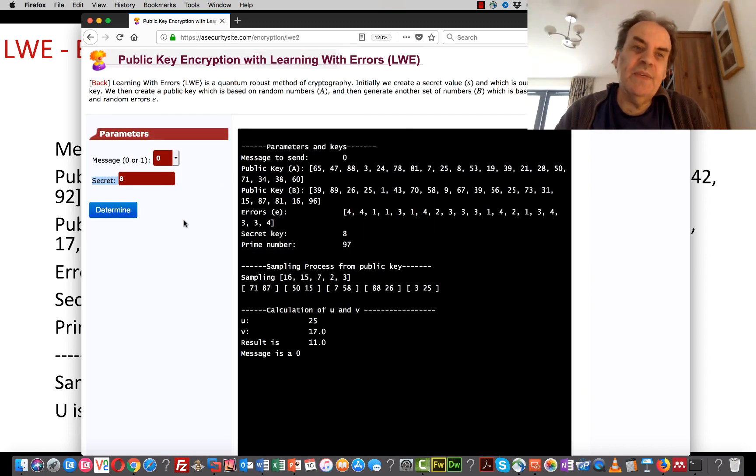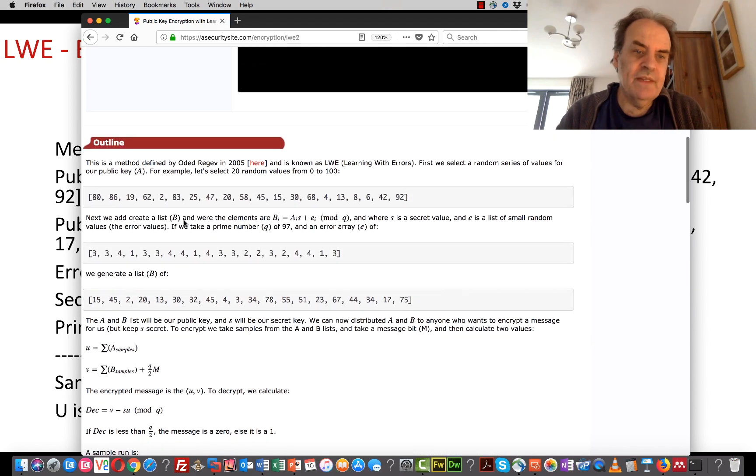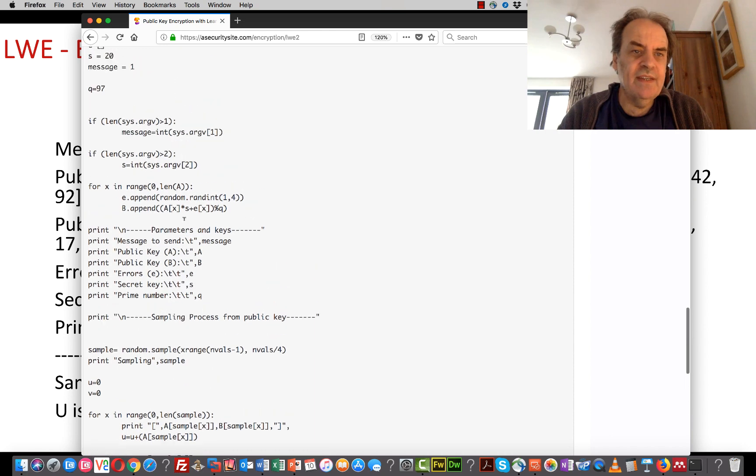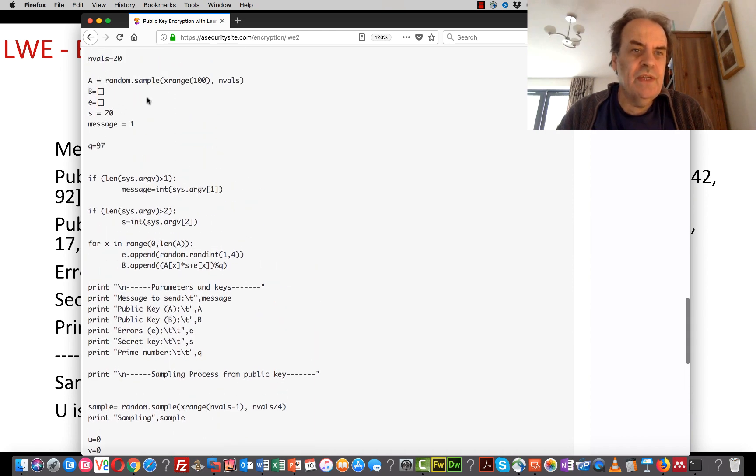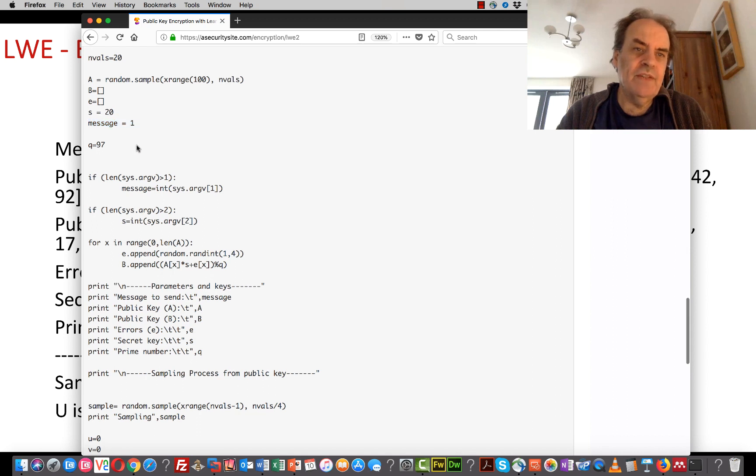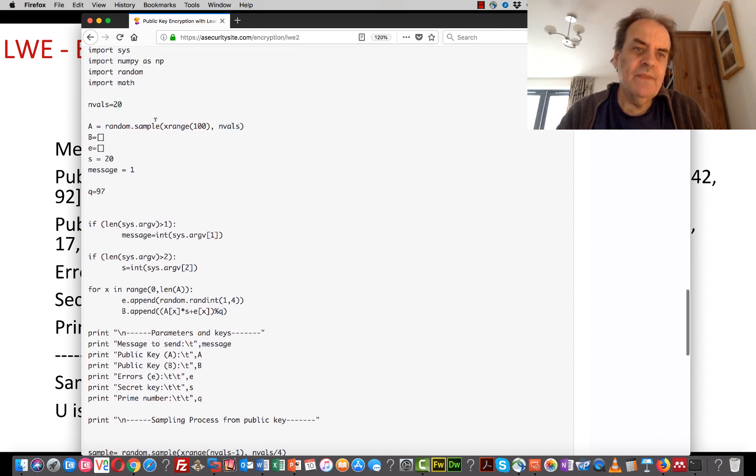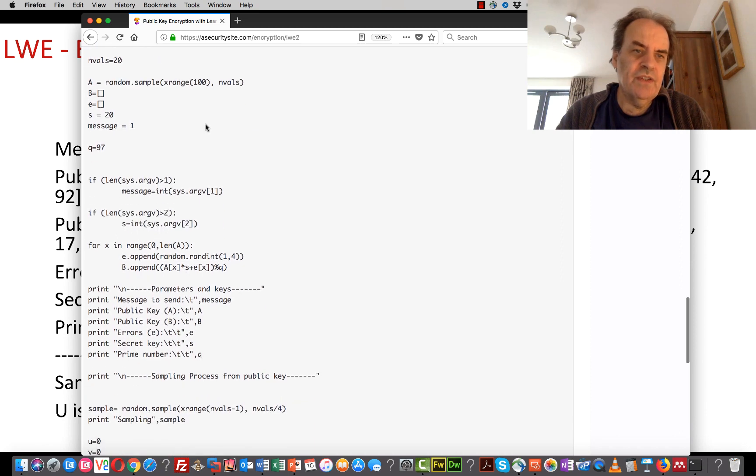So this is the way we create quantum robust methods. Looking at the code, here is the value of S. There's the message, just an example with a single bit. This is generating the sample range with a number of values, in this case 20, between 0 and 100. Obviously we make it up to 97.